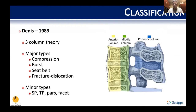Denis had one of the first classifications, conceptually breaking the spine into three columns: anterior, middle, and posterior. The anterior column is the anterior two-thirds of the vertebral body and the anterior longitudinal ligament. The middle is the posterior one-third along with the posterior longitudinal ligament. The posterior column is everything posterior to that: pedicles, lamina, spinous process, and the posterior ligamentous complex. Denis also recognized minor fracture types, such as spinous process and transverse process fractures, that are probably not structurally significant.